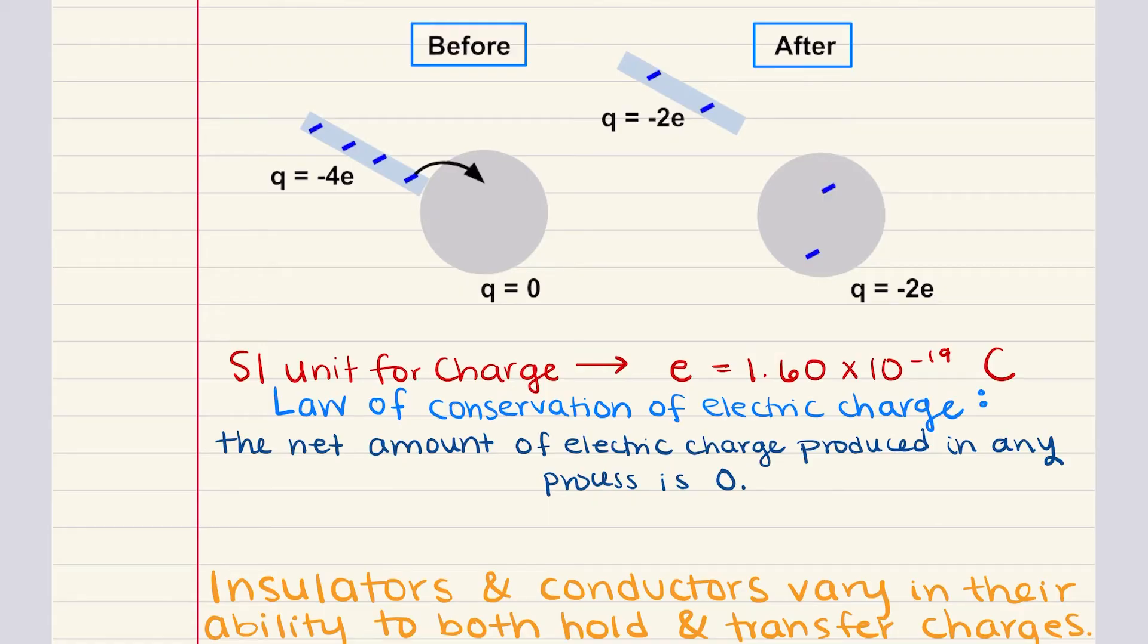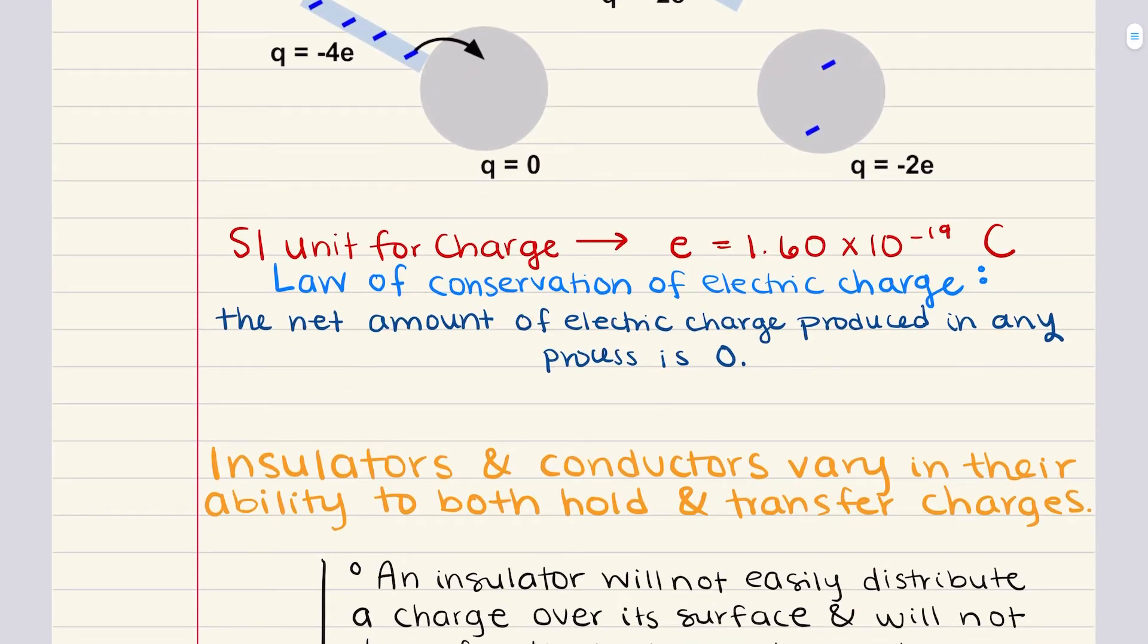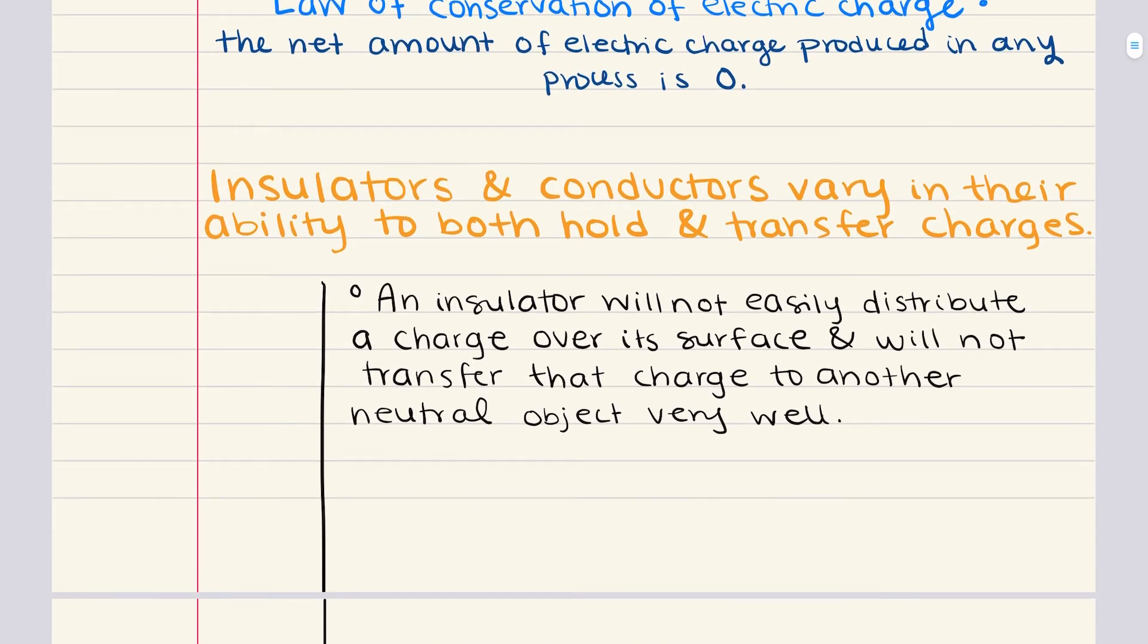To quantify electric charge, we use the SI unit of charge, the coulomb. 1.6 times 10 to the negative 19 coulomb is the magnitude of the charge carried by a single proton or single electron. And while protons carry this charge as positive and electrons as negative, the magnitude of the charge is the same for both.